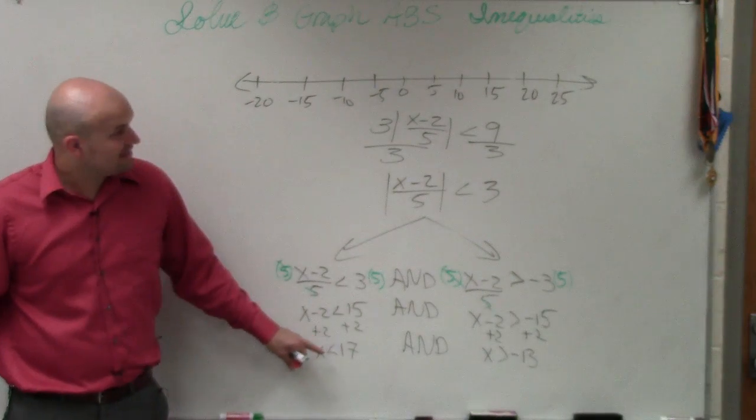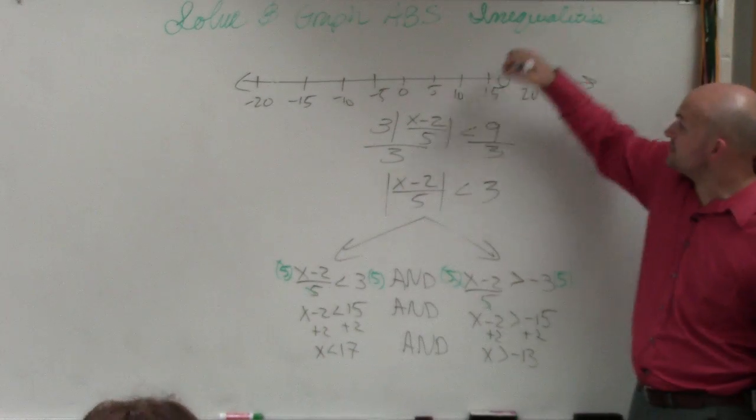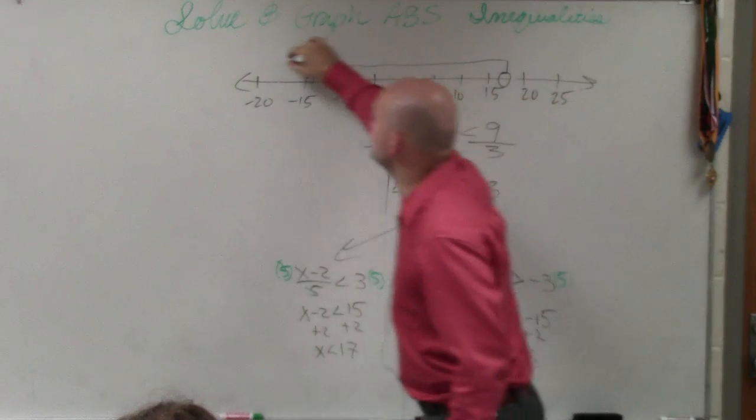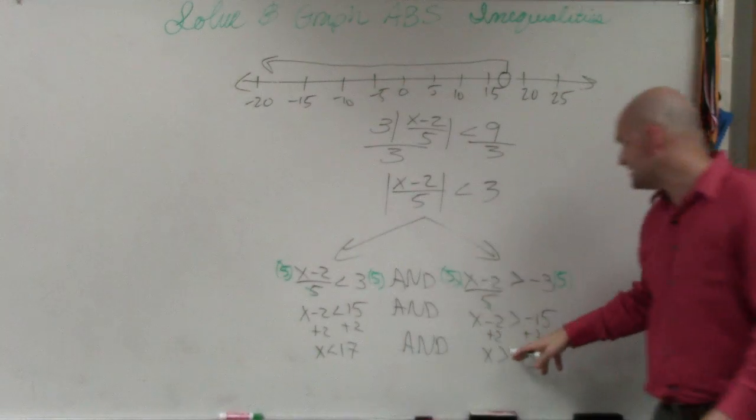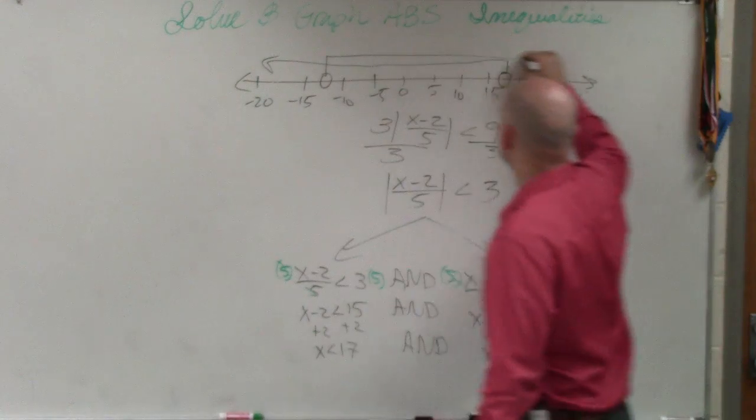So x has to be less than 17. So I'm going to go over to 17, make a nice big circle. That's less than, so I'm just going to go off my graph and just go to the left. x has to be greater than negative 13. So I'm going to go over here, go off my graph, and then go between.